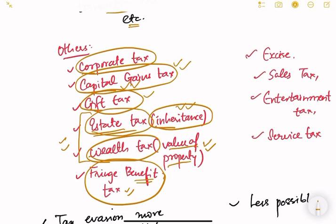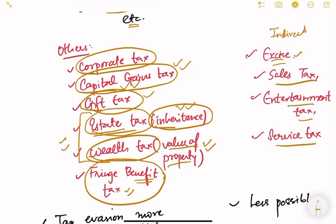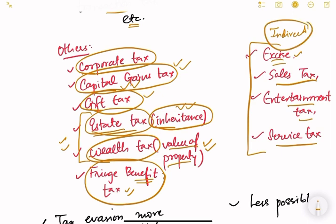Examples of indirect taxes include excise duties, sales tax, entertainment tax, service tax, GST, VAT, and customs tax - these are the different kinds of taxes which come under the indirect tax category.